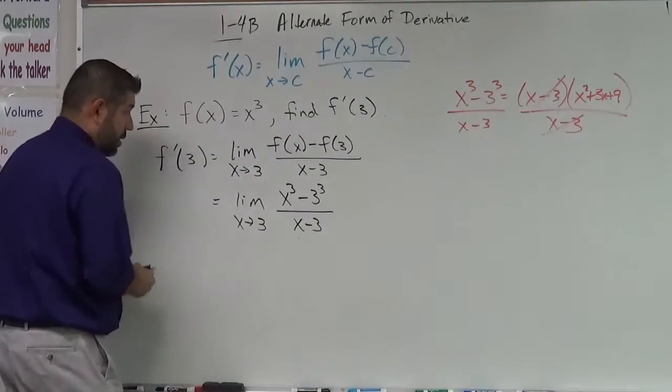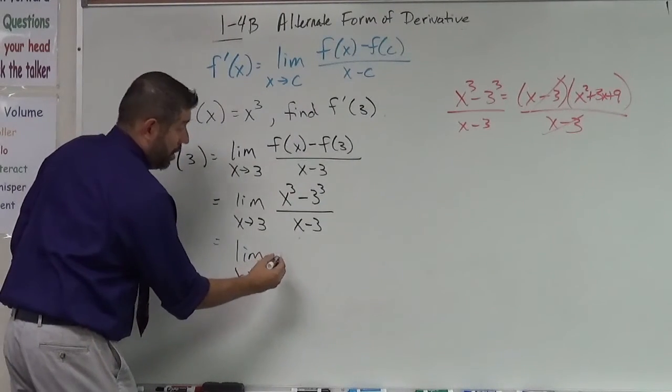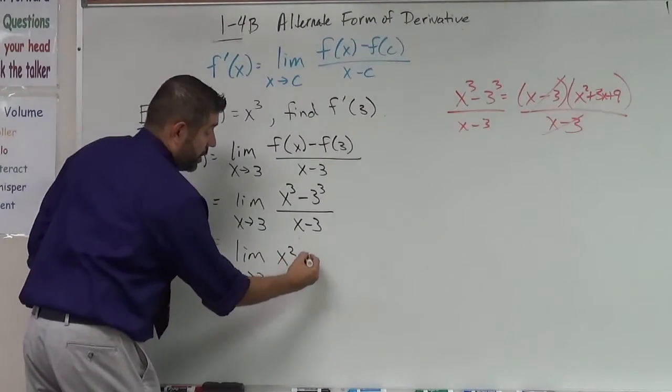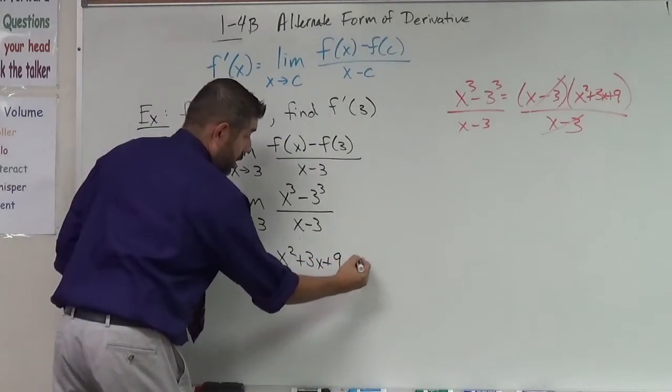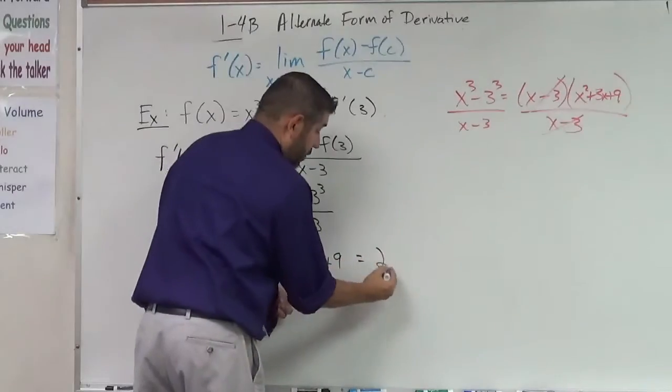So we're going to have the limit as x approaches 3 of x squared plus 3x plus 9. We're going to go ahead and plug in 3 in here, and we're going to get our answer of 27.